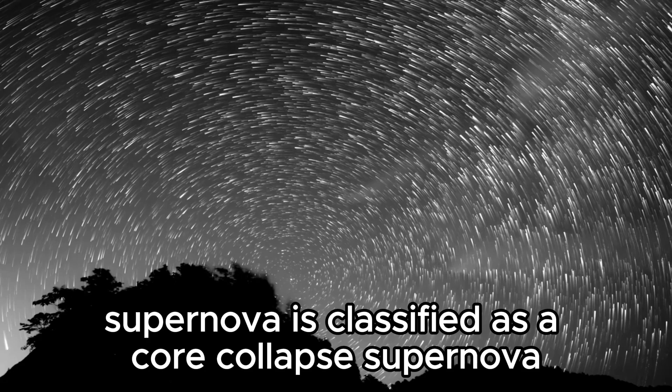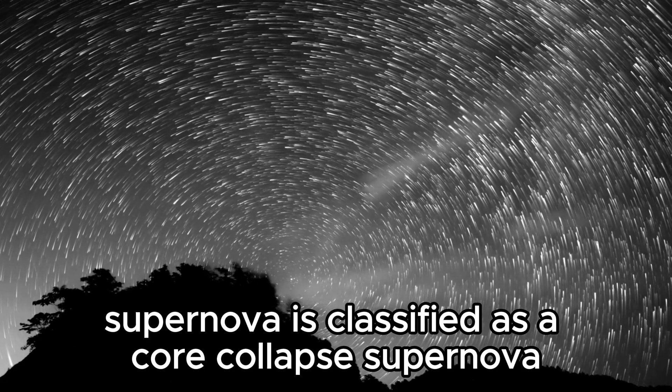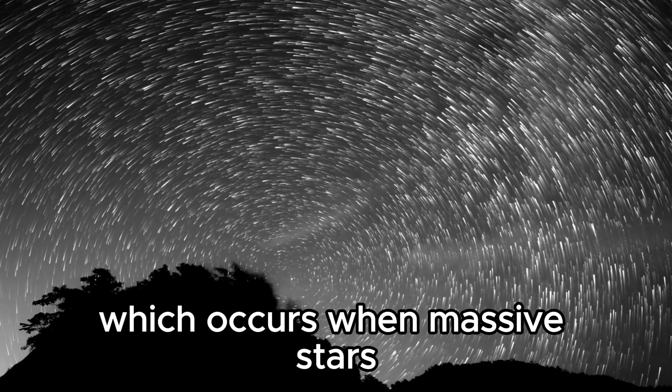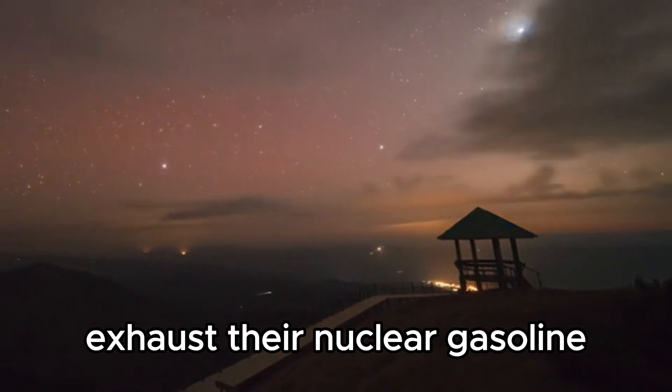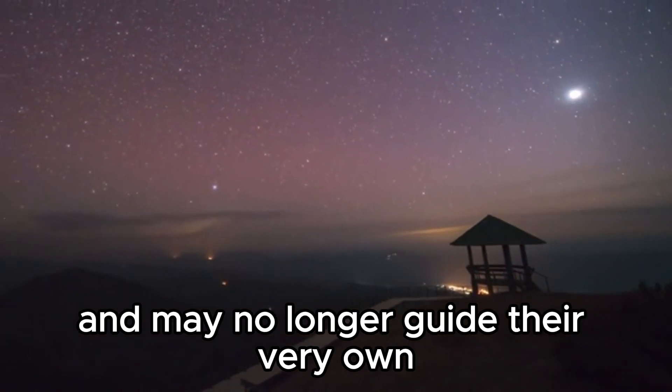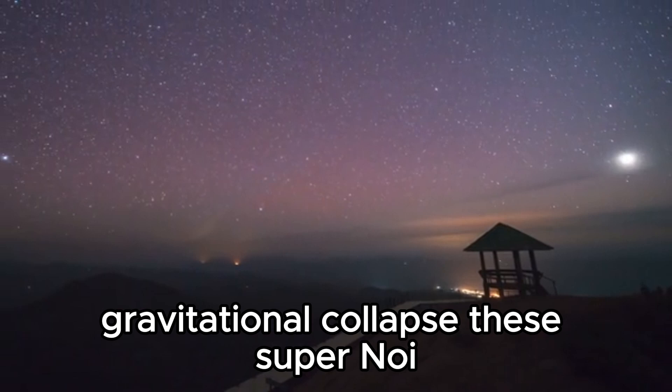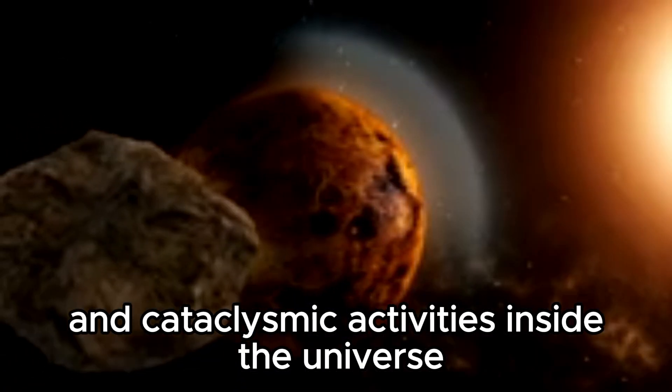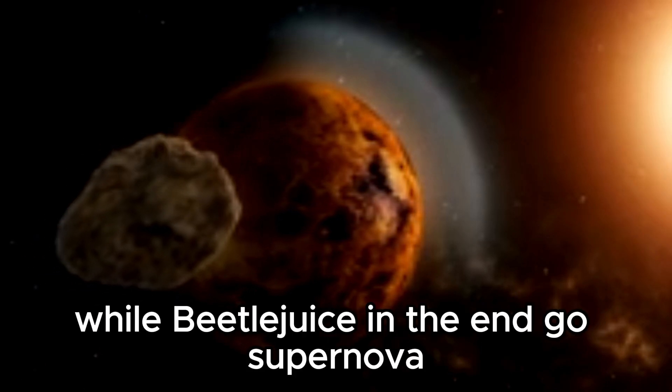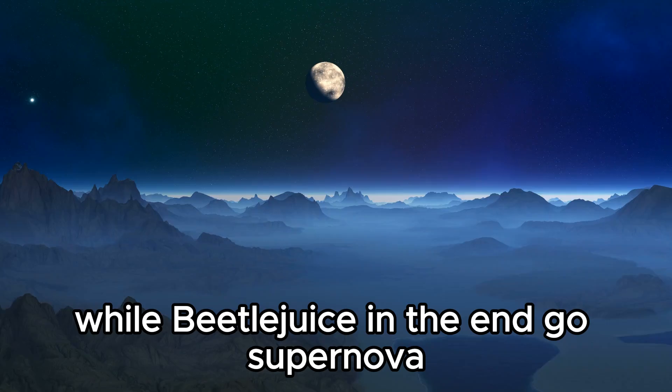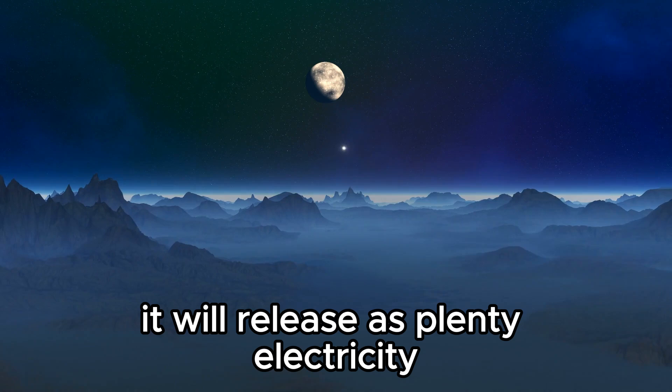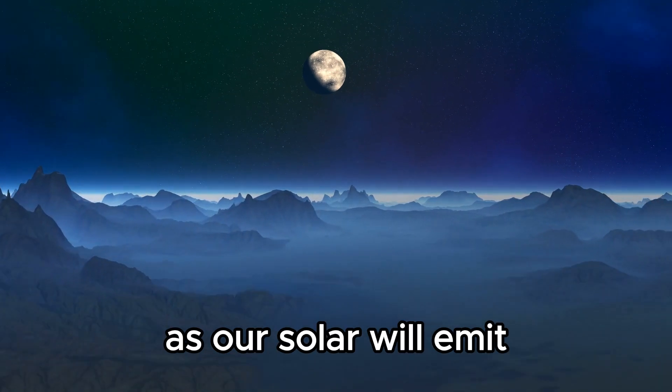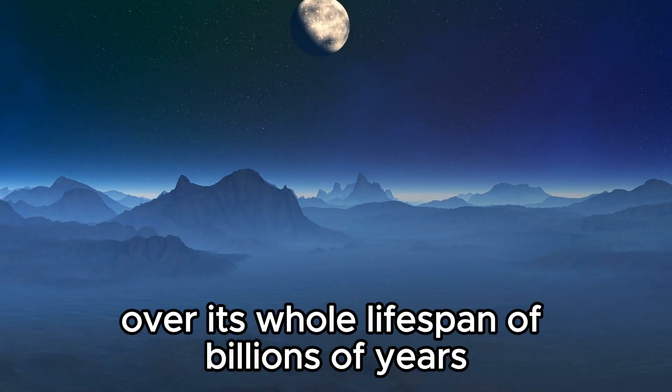Betelgeuse's approaching supernova is classified as a core-collapse supernova, which occurs when massive stars exhaust their nuclear fuel and can no longer support their own gravitational collapse. These supernovae are among the most active and cataclysmic events in the universe. When Betelgeuse eventually goes supernova, it will release as much energy in a matter of seconds as our sun will emit over its entire lifespan of billions of years.